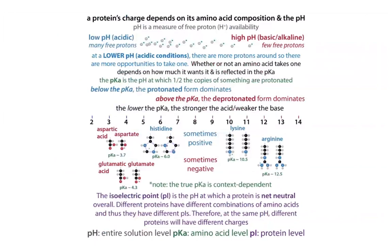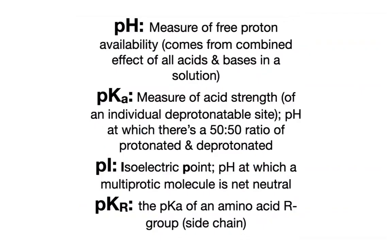Some amino acids are going to be protonatable — some will be basic, some acidic, and a lot will be neutral. Different combinations of amino acids lead to different overall charges, and that charge depends on the pH. This is reflected in the property called the pI. The pI is the isoelectric point — the pH at which a multiprotic molecule is net neutral. For each acid site we can talk about a pKa, and when talking about the relative acidity of amino acid side chains, we use the term pKr.